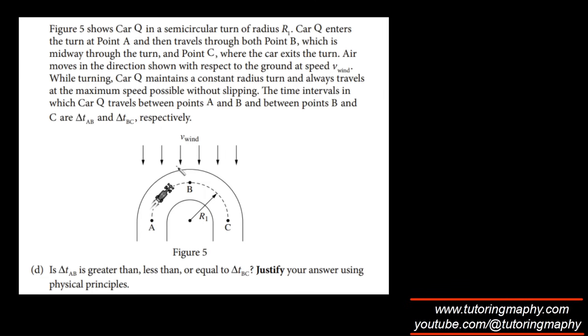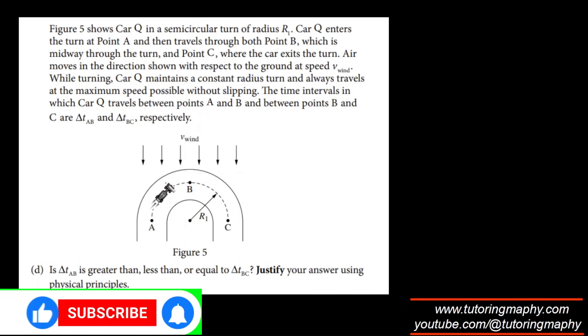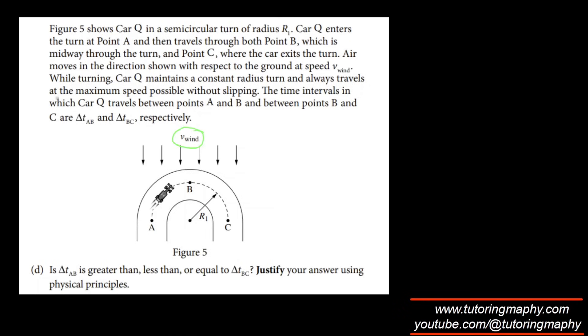Let's try this last one. So we're given that figure 5 shows car Q in a semicircular turn of radius R1. Car Q enters the turn at A, then travels through B, which is midway and then point C where the car exits the turn. Air moves in a direction shown with respect to the ground at speed V_wind. So it is sort of like opposing the motion, at least when it is going from A to B. When turning car Q maintains a constant radius turn and always travels at the maximum speed possible without slipping. The time intervals in which Q travels from A to B and B to C are ΔT_AB and ΔT_BC respectively.